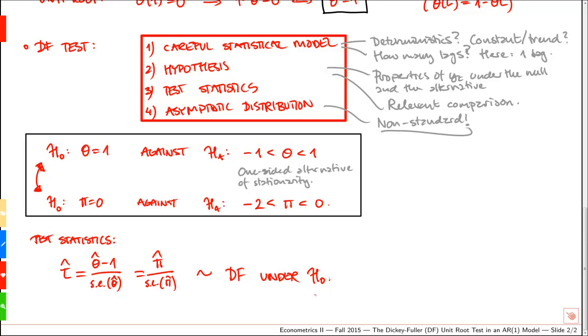So that's the asymptotic distribution under the null. Note, first, that the test statistic follows a Dickey-Fuller distribution, not a standard normal distribution.